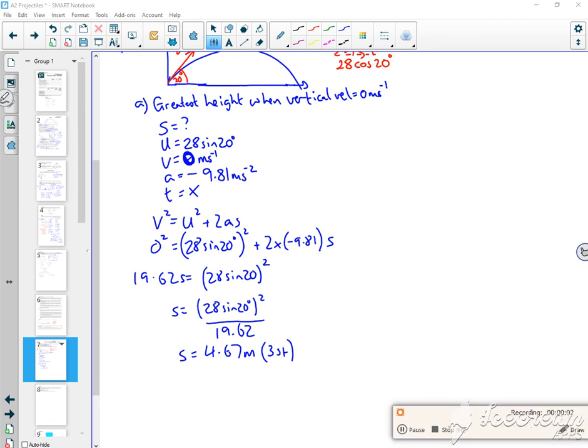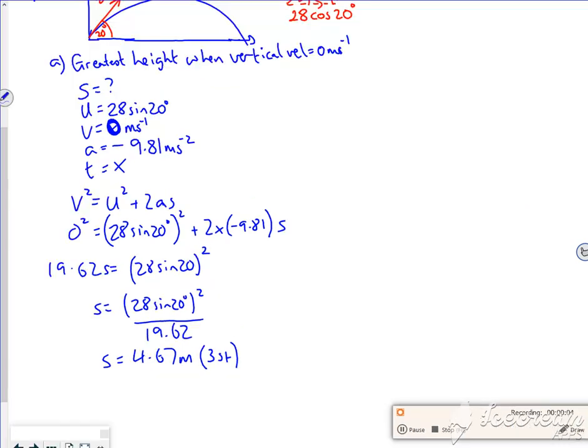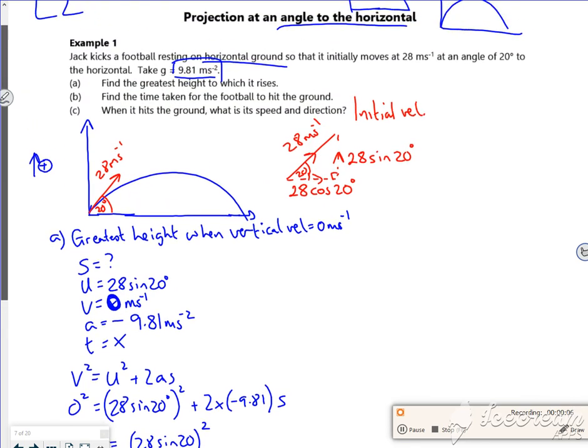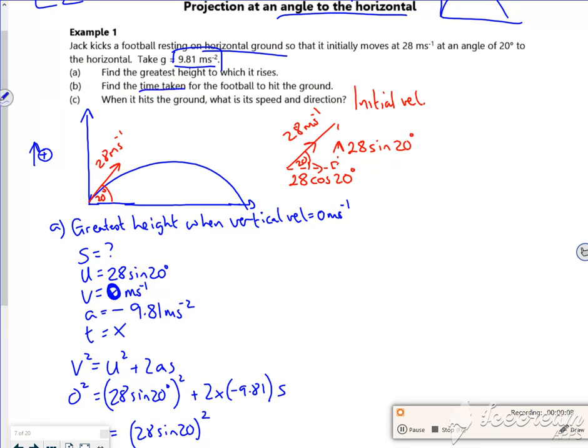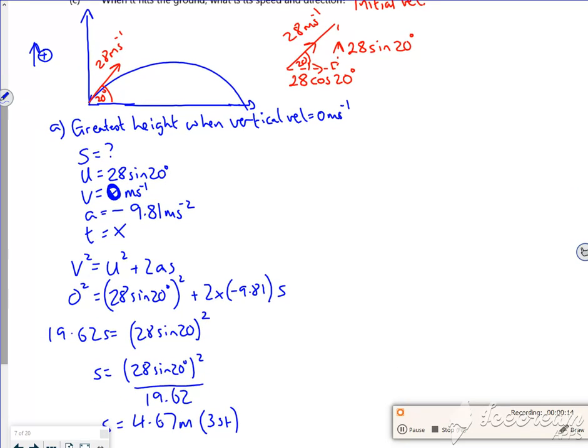Right then, so next video is doing part B. Part B is finding the time taken to hit the ground. So vertically my distance is zero. So for part B, for the flight time, vertically my distance is zero. So S is zero.